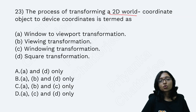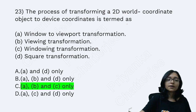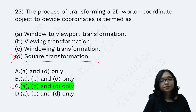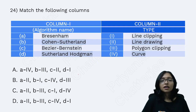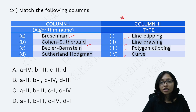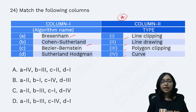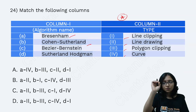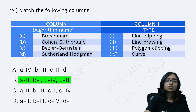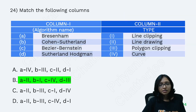For 2D world coordinate to device coordinate transformation, the squaring transformation is not required, so ABC is the correct answer. Also, match column one with column two: Bresenham for line drawing, Sutherland for line clipping, and so on for polygon and curve. Prepare a list of different algorithms and where each is used — this is a very common exam question.